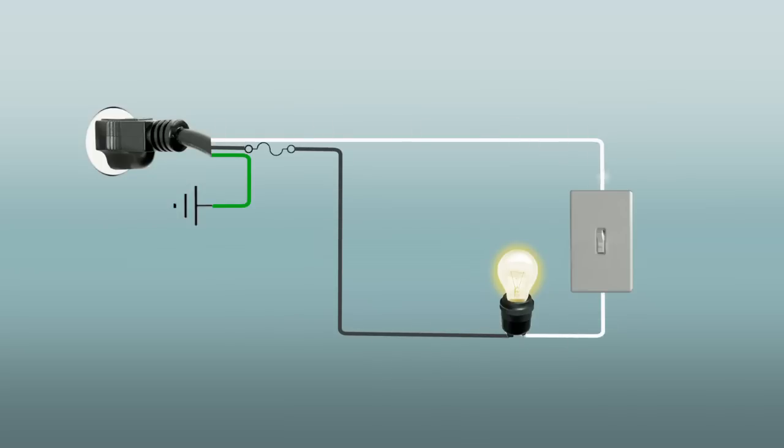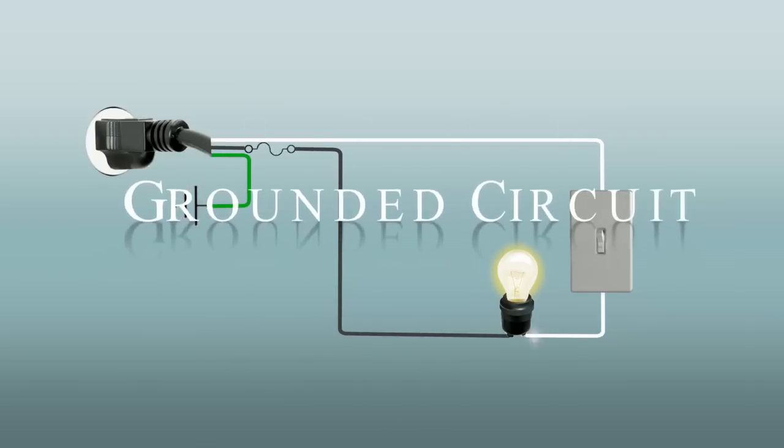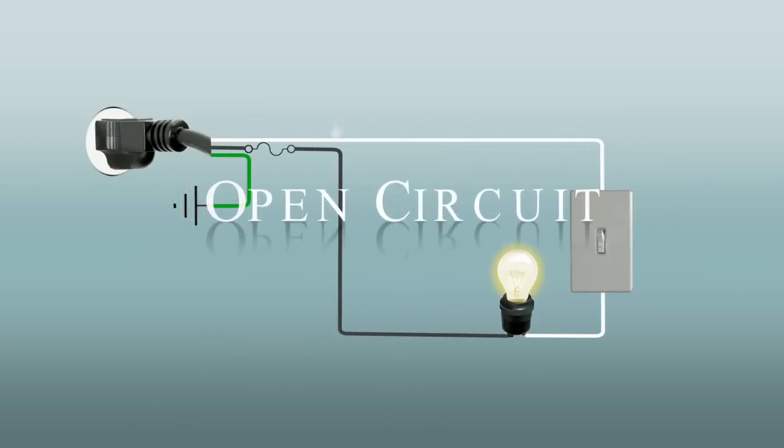There are three basic problems that can occur with an electrical circuit: a shorted circuit, a grounded circuit, or an open circuit. Simple. The key is learning how to read the signs.